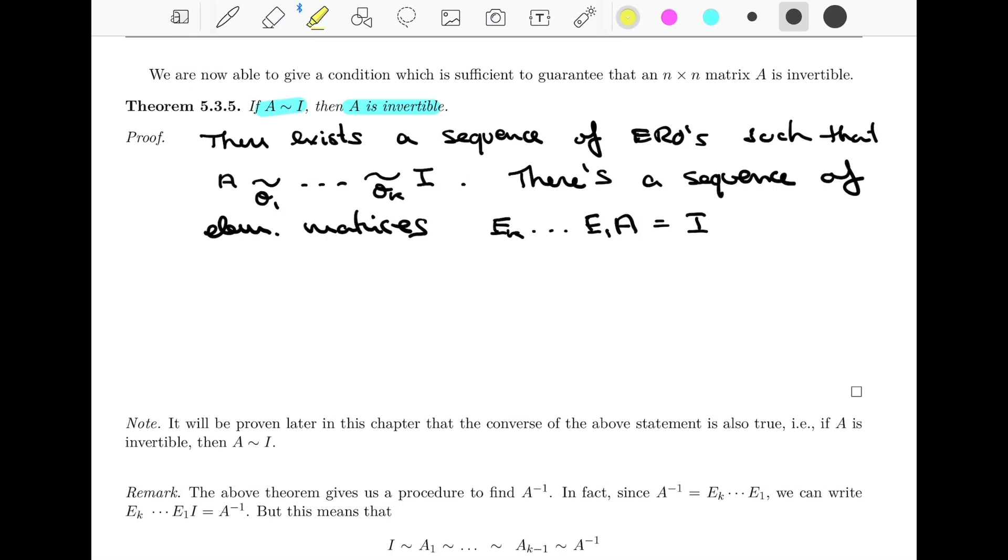So we've seen, we understand how this works now, that doing this sequence of elementary row operations on A in order to get I is the same thing as left multiplying by this sequence of elementary matrices, right? But if you look at what we just wrote, you'll recognize right away that this is the product of elementary matrices, so we can call it P, but we can also call it A inverse.